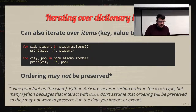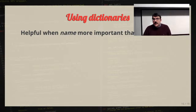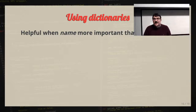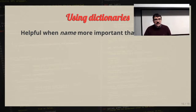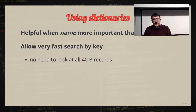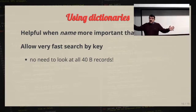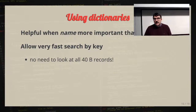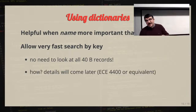Dictionaries are really helpful when we don't care about the order of things but do care about giving sensible names. For example, storing attendance values keyed by date strings: I might care that it was the class on February 15th — the midterm day — rather than class number 13. Dictionaries allow us to find things by key super fast. Instead of searching 40 billion records linearly, we compute a hash value for the key and instantly find it in the dictionary.